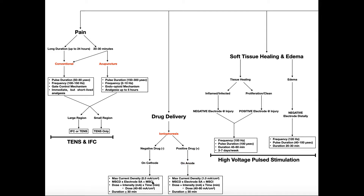We can obtain the maximum safe current intensity by taking that maximum safe current density — which is a given for the particular electrode — and multiplying it by the surface area of the electrode. For example, if we're having a drug on the anode, which has a maximum safe current density of 1 milliamp per square centimeter, and the electrode had a surface area of 6 square centimeters, we would take that 1 and multiply it by 6, and that would give us a maximum safe current intensity of 6 milliamps.